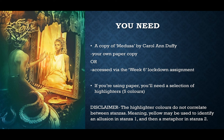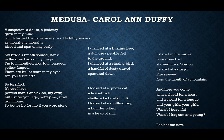Let's firstly have a read through the poem to remind ourselves. 'A suspicion, a doubt, a jealousy grew in my mind which turned the hairs on my head to filthy snakes as though my thoughts hissed and spat on my scalp. My bride's breath soured, stank in the grey bags of my lungs. I'm foul-mouthed now, foul-tongued, yellow-fanged. There are bullet tears in my eyes. Are you terrified? Be terrified. It's you I love, perfect man, Greek god, my own. But I know you'll go, betray me, stray from home. So better be for me if you were stone.'